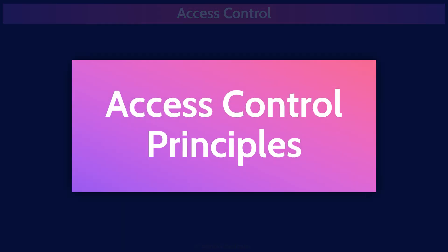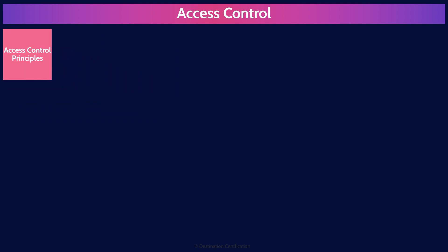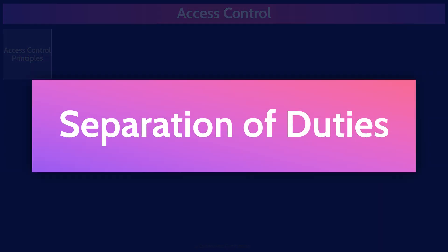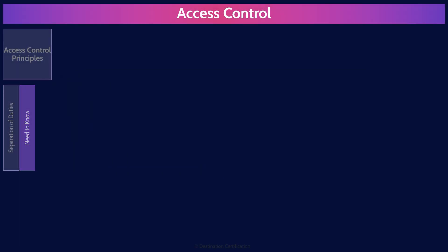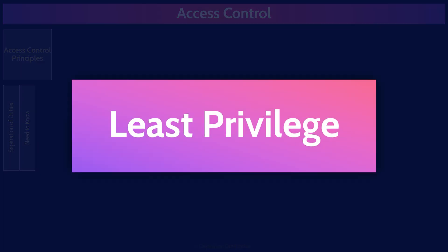There are three major principles that we apply throughout access control. The first is separation of duties — to divide up key processes into multiple parts assigned to different people. Need to know and least privilege are very similar: only give users access to what they need based on their job and nothing more. Need to know is focused on restricting a user's access to data to only what's required for their role, whereas least privilege is focused on restricting a user's actions to only those required for their role.